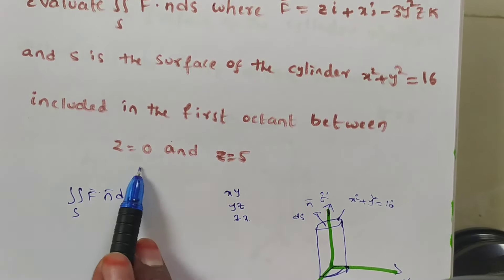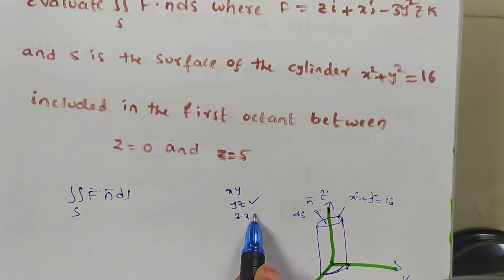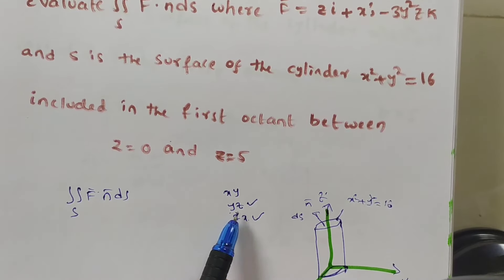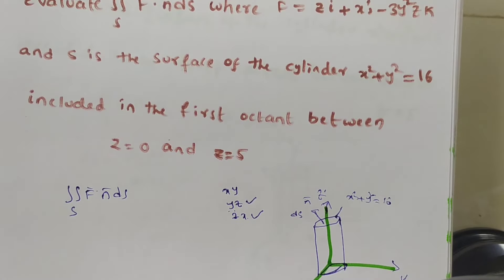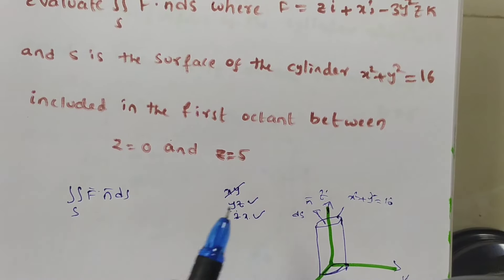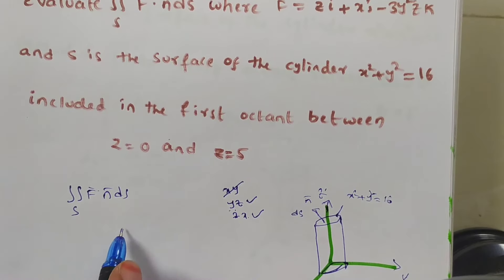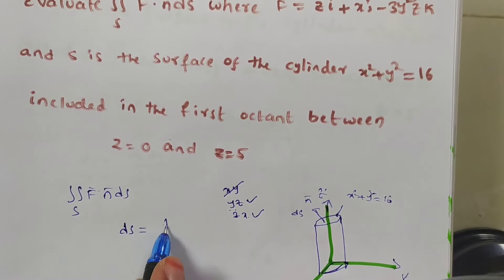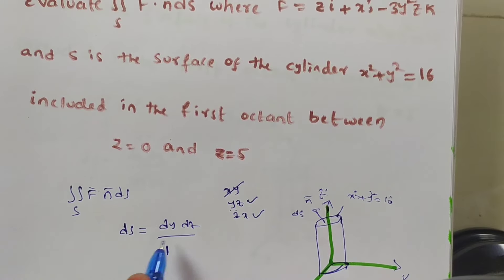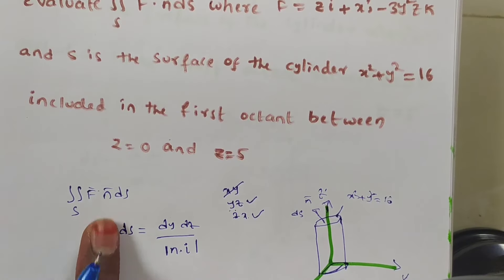Since z limits are already given, we should take the projection on the yz-plane or zx-plane — not the xy-plane. I am choosing the yz-plane. So ds = dy dz divided by |n̄ · î|, since dx is missing.